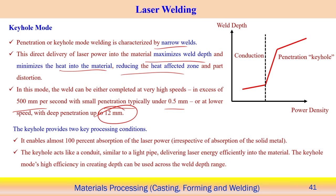Looking at power density versus weld depth: in conduction mode the slope gradually increases. At a certain zone there is a transition from conduction to keyhole mode, where the slope changes sharply over a narrow power density range. When power density is very high, the keyhole mode laser welding system is created and the keyhole size increases as power density gradually increases.